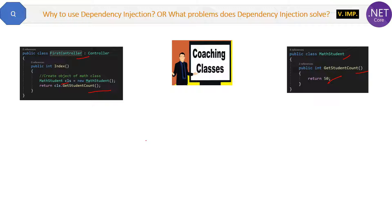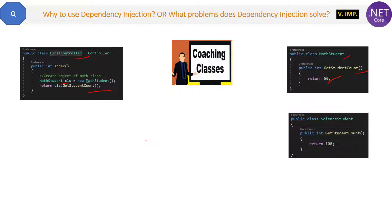You then call the method inside the MathStudent class. This is the traditional approach. Now after some months, your client or manager asks you to replace the MathStudent class with a ScienceStudent class. You create the ScienceStudent class — the method name is the same but the functionality differs; here GetStudentCount returns 100. To replace it, you simply swap MathStudent with ScienceStudent in the controller, and the problem is solved. This is fine for one controller.